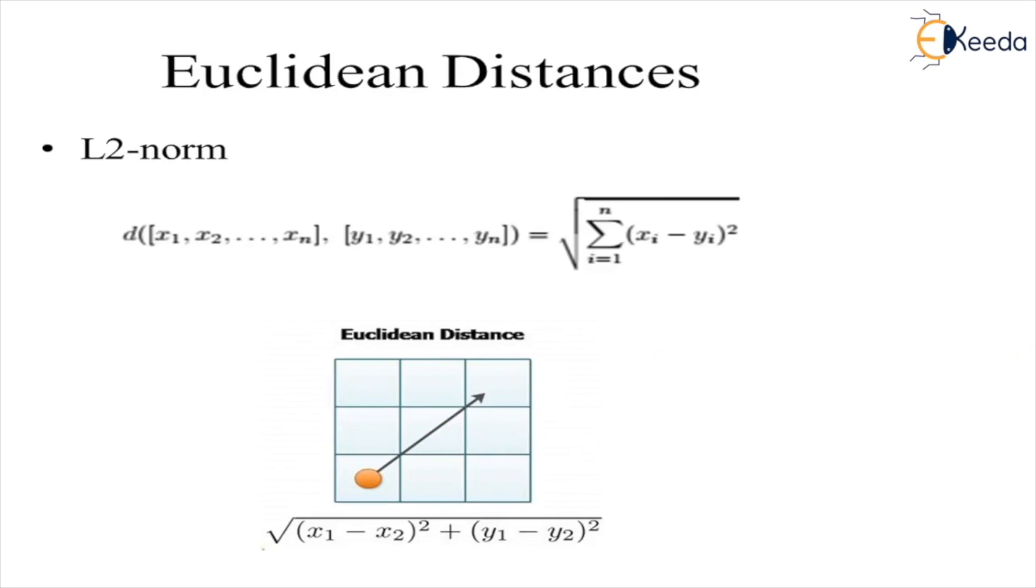Euclidean distance, we call it the L2 norm. In this, we take the diagonal distance. We know there is a famous formula for distance: the diagonal distance is √[(x1-x2)² + (y1-y2)²].